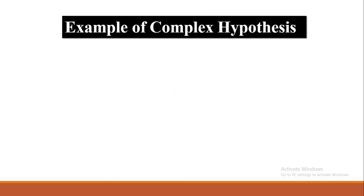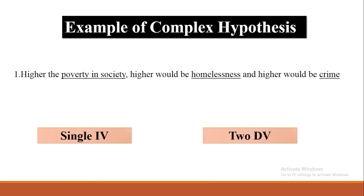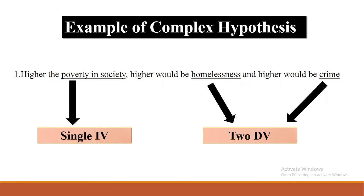For example, higher the poverty in society, higher would be homelessness and higher would be the crime in the society as well. In this case, poverty in society is a single independent variable while homelessness and crime are the two dependent variables — homelessness and crime both depend upon the poverty level. If there is more poverty in the society, there will be more homelessness and crime. Similarly, if the poverty levels are low, there will be a reduced level of homelessness and crime, as these are the two dependent variables of poverty in the society.